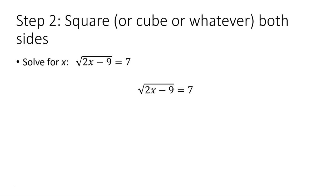The next move is to square, or cube, or whatever it takes, both sides. Because we have a square root, we will square both sides. That means the left-hand side is now just 2x minus 9. When you square the square roots of something, you get just that something. And the right-hand side, 7 squared is 49.